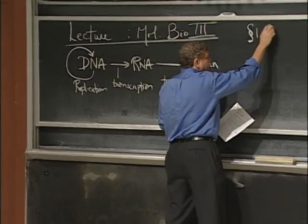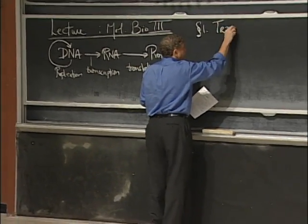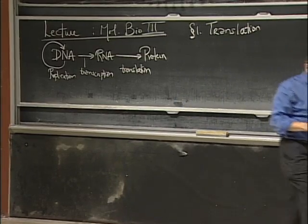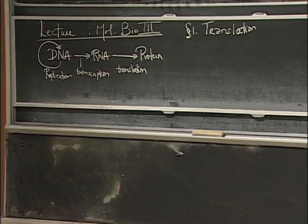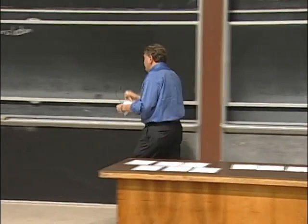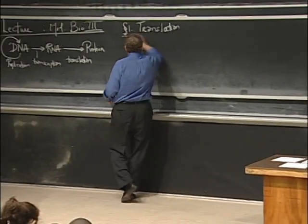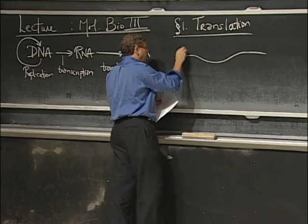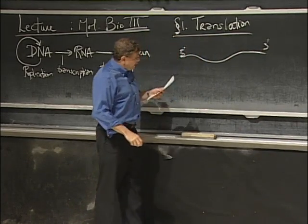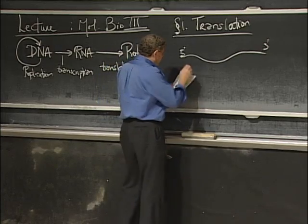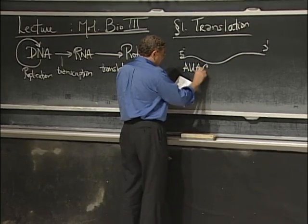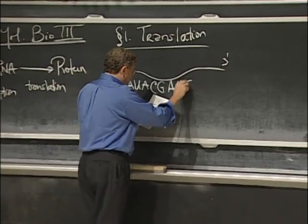So let me start by just reminding you, because most of you know it, how translation works. In translation, you have a particular RNA that has been made by the cell. Here's my RNA — it goes 5 prime to 3 prime, that's always the way we write these things. And it has some particular sequence. I'll make up a sequence here: A, U, G...